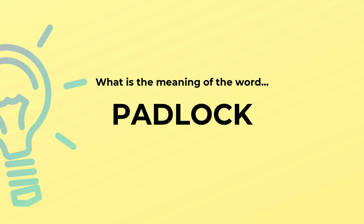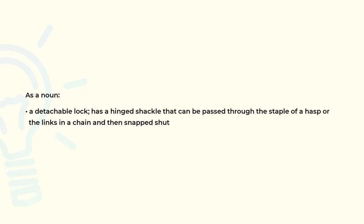What is the meaning of the word padlock? As a noun, a detachable lock has a hinged shackle that can be passed through the staple of a hasp or the links in a chain and then snapped shut.